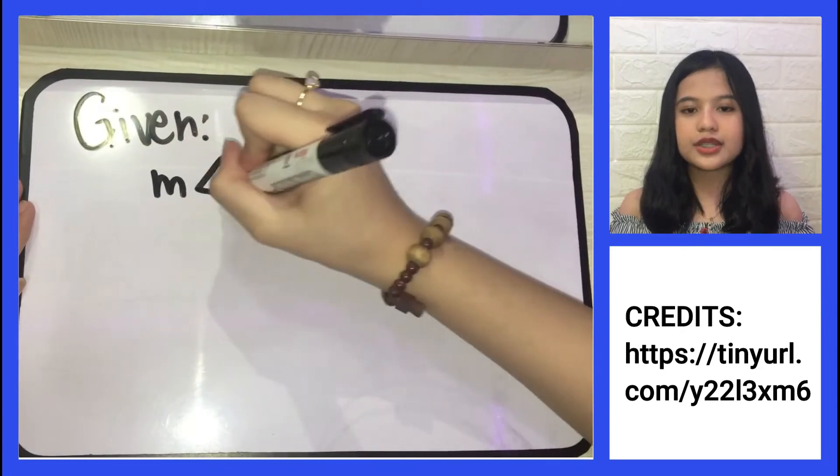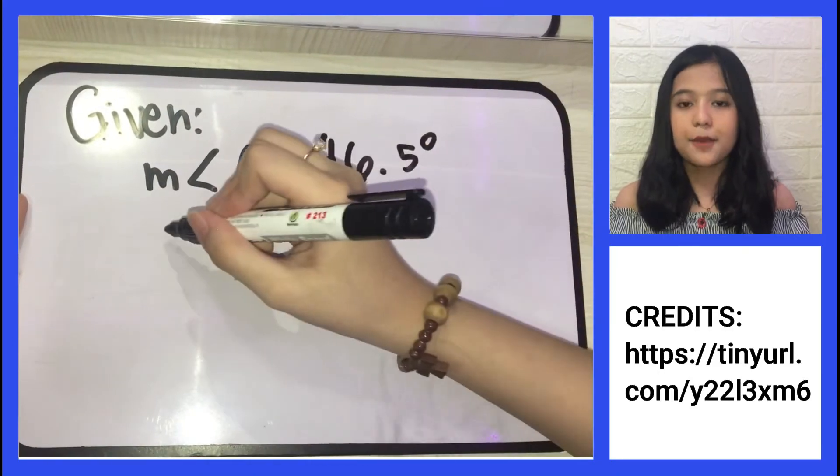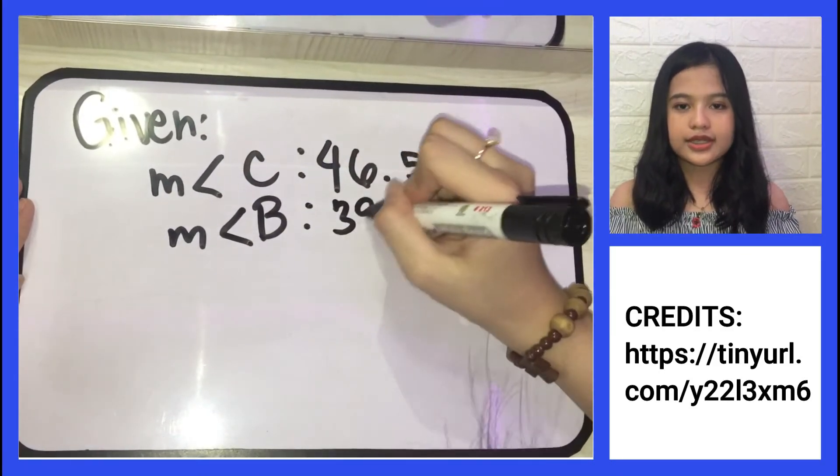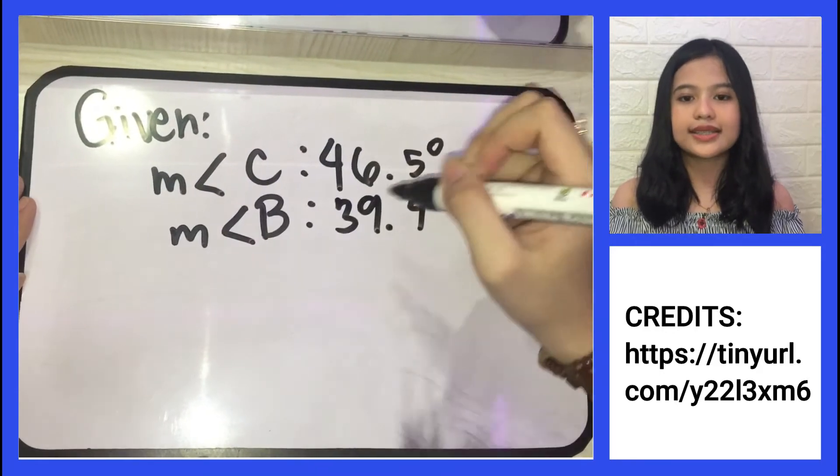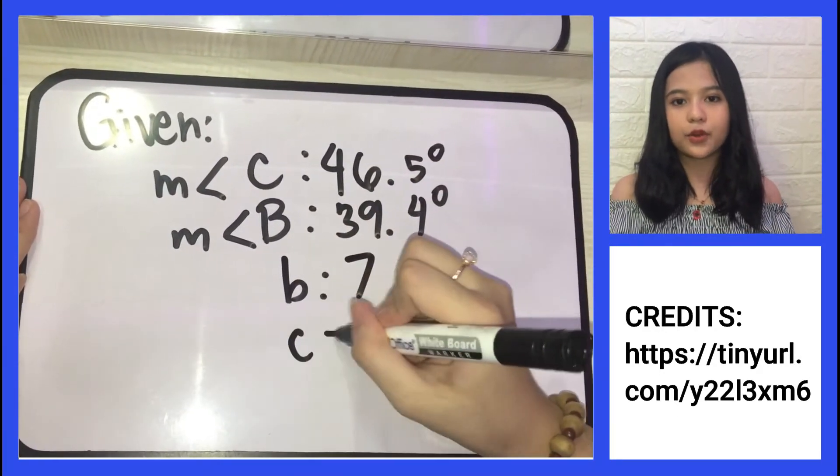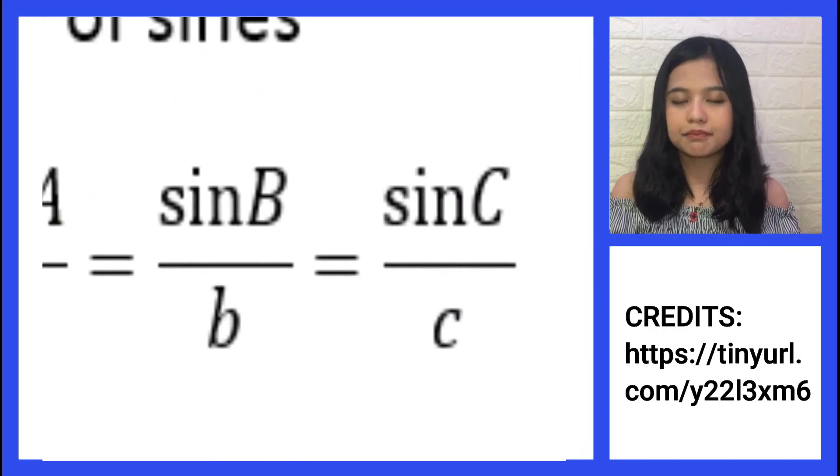First step is to substitute the given. Measure of angle C equals 46.5 degrees. Measure of angle B is equal to 39.4 degrees. Side b equals 7 while side c is missing. To apply the law of sines, we can use the formula sin B over b equals sin C over c.